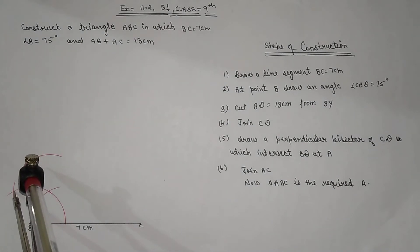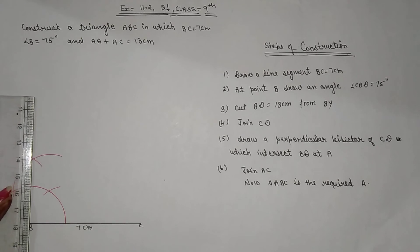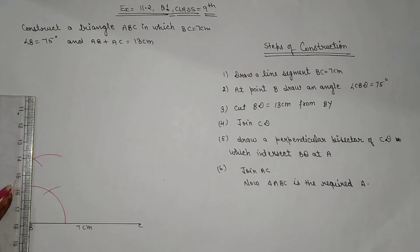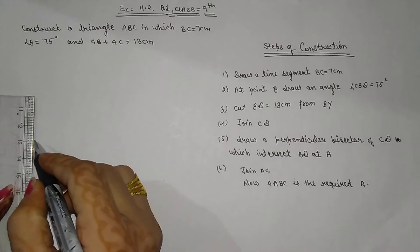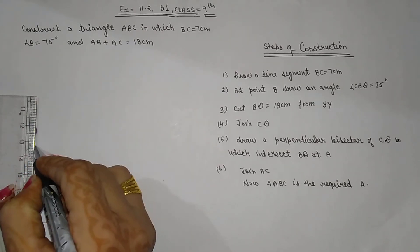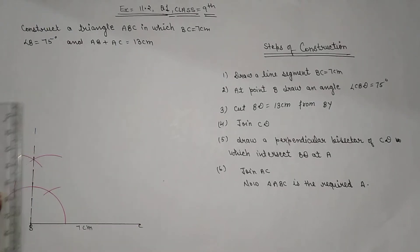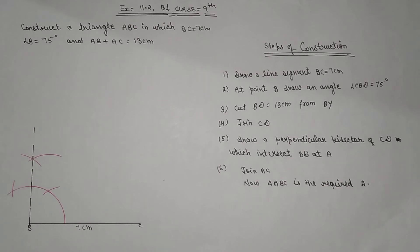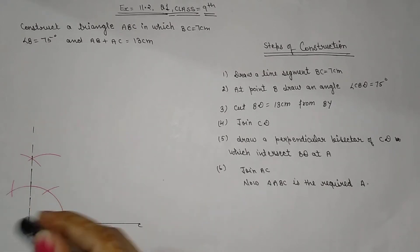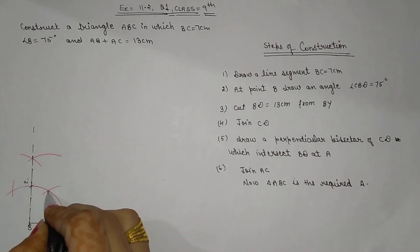We intersect with another arc and join BC. This gives us a 90 degree angle. This arc gives 90 degrees and this one gives 60 degrees.